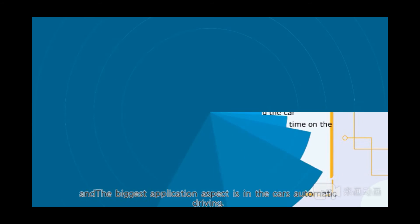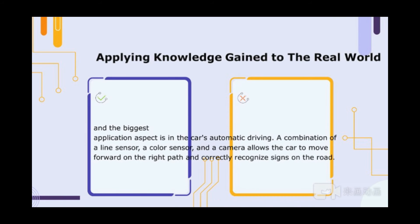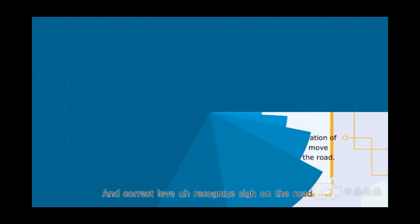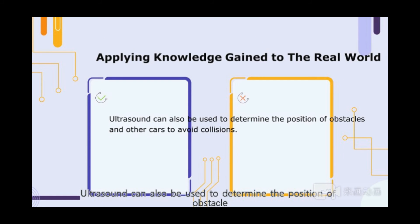The biggest application aspect is in the car's automatic driving. A combination of a line sensor, a color sensor, and a camera allows the car to move forward on the right path and correctly recognize signs on the road. Ultrasound can also be used to determine the position of obstacles and other cars to avoid collisions.